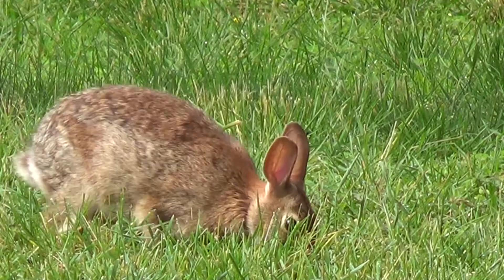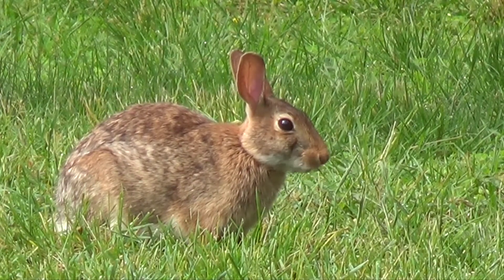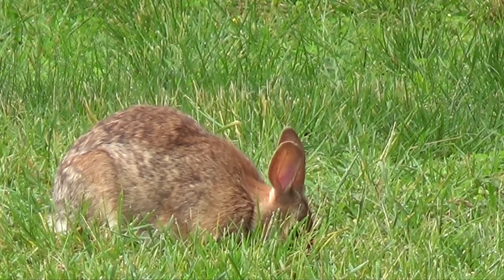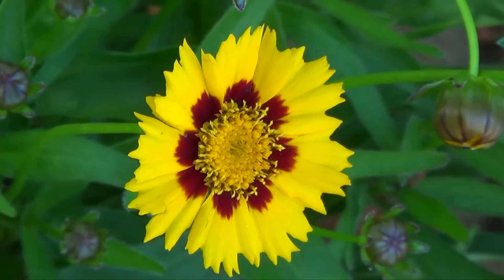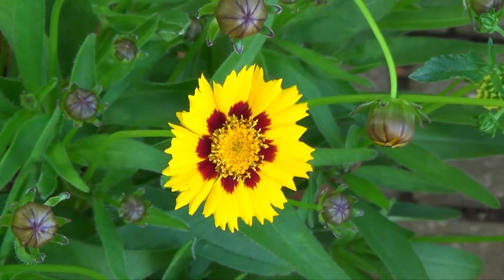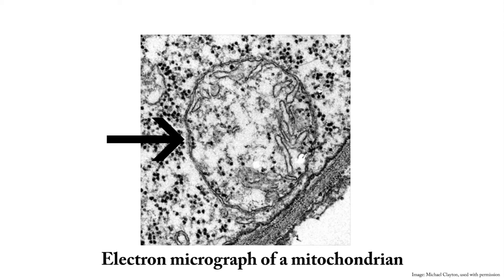Even though plants can make their own food, they also need to eat. Just like animals, plants need to break down food into energy to function. The process used to break down sugar and release energy is called respiration. You can think of respiration as the opposite of photosynthesis. The process of respiration also takes place on a cellular level, in a structure called the mitochondria.